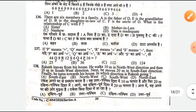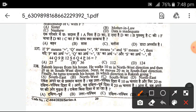If P means plus, Q means multiply, R means divide, and S means subtract, then solve the expression. After solving, the answer will be 25.